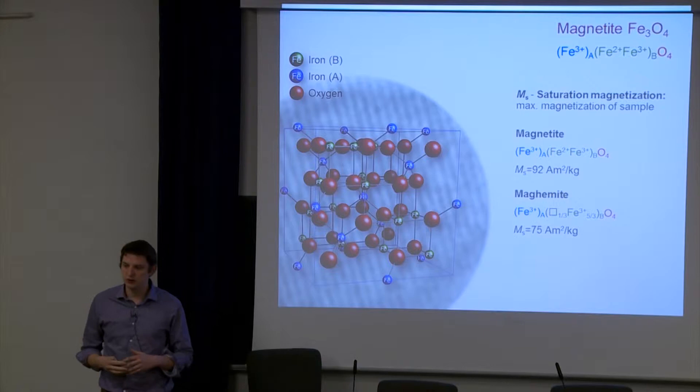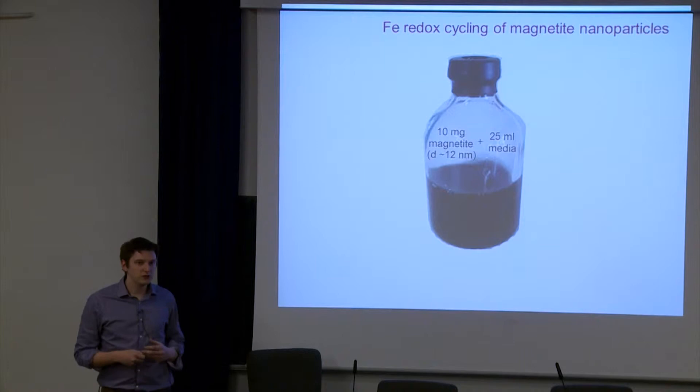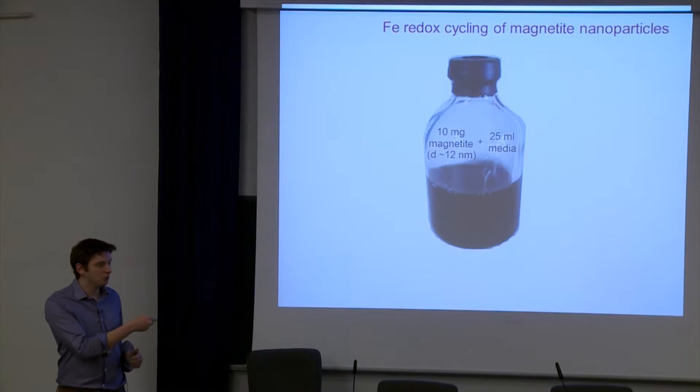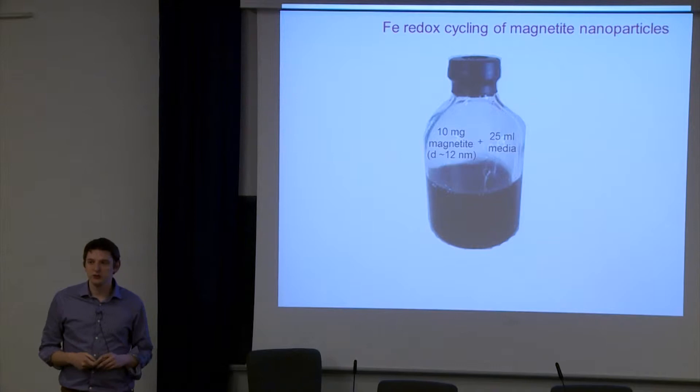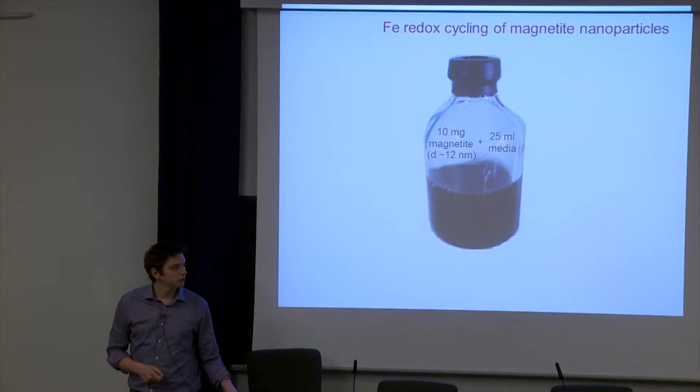So onto the experiment. Simply what I wanted to do was see whether the presence of these different bacteria, iron oxidizers or iron reducers, might induce changes in magnetite depending on various conditions. I have a simple bottle around 50 milliliter volume. Into this, I added 25 milliliters of media that can support both bacteria. Then added about 10 milligrams of magnetite. The magnetite itself is very small, superparamagnetic, 12 nanometers. You can see here from this image the size is relatively uniform, around 12 nanometers.